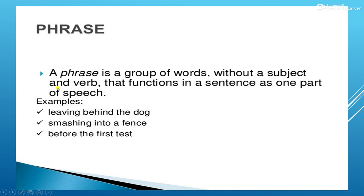Now, a simpler way to understand a phrase: if we say a train, in the train there are compartments. The engine and compartments work together. Without the engine, the compartments alone have no meaning. Similarly, a phrase is just one part of a sentence — it cannot give complete meaning on its own.